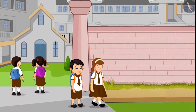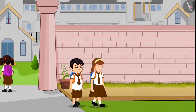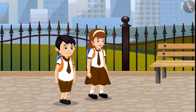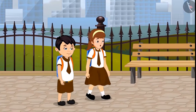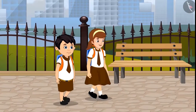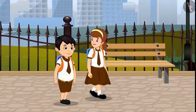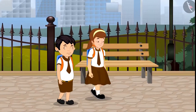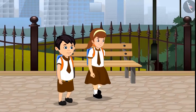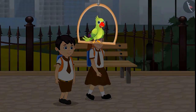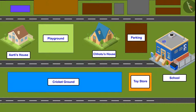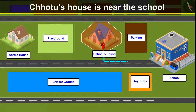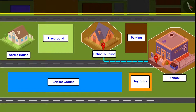Chotu and Aarti are walking home from school today. On the way back home, Aarti spoke to Chotu: 'Chotu, we leave from school to go home at the same time, but you always arrive early and I get home later. Why is it so?' Children, do you know why does this happen? Come on, let us see.